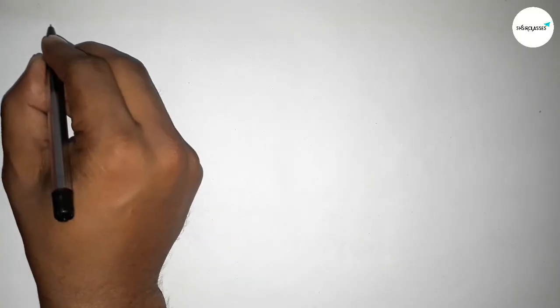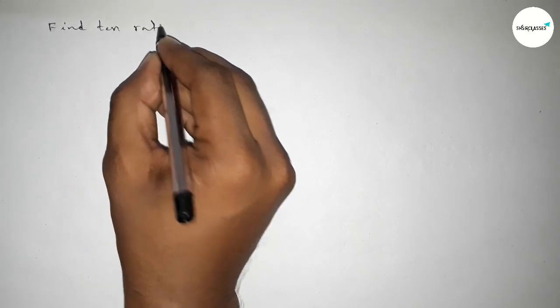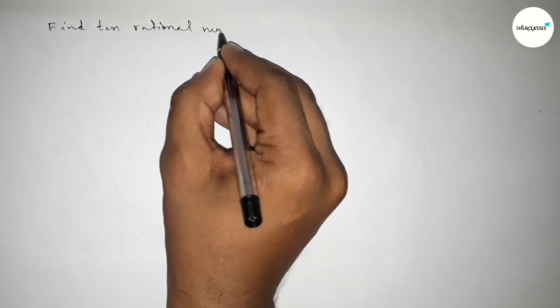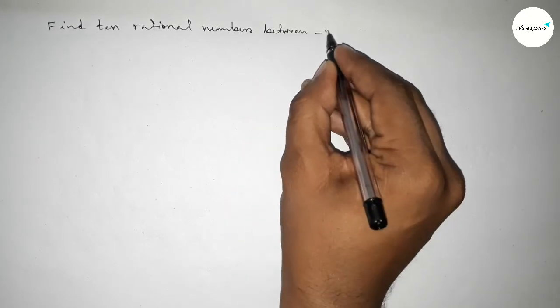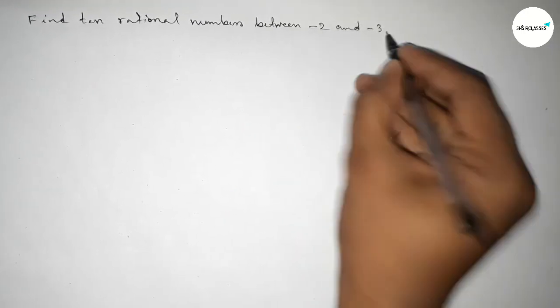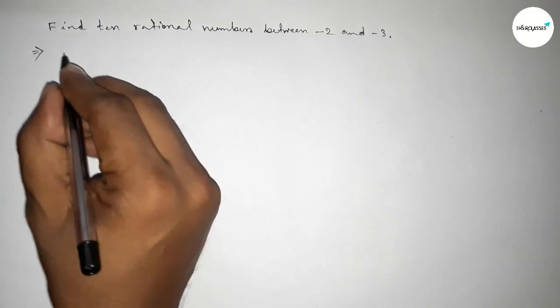Hi everyone, welcome to SI Share Classes. Today in this video we have to find out 10 rational numbers between minus 2 and minus 3. So let's start the video. First of all, write down here the given two numbers.